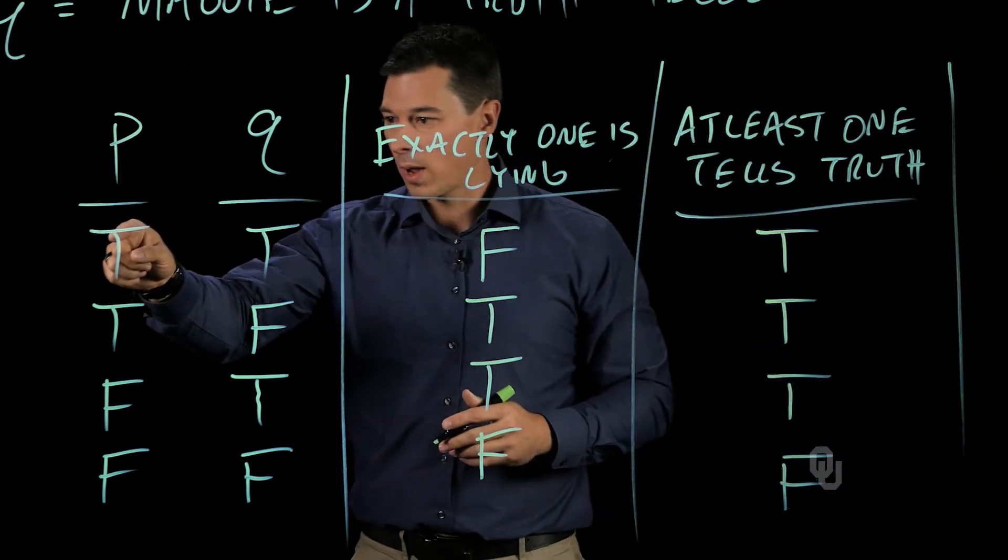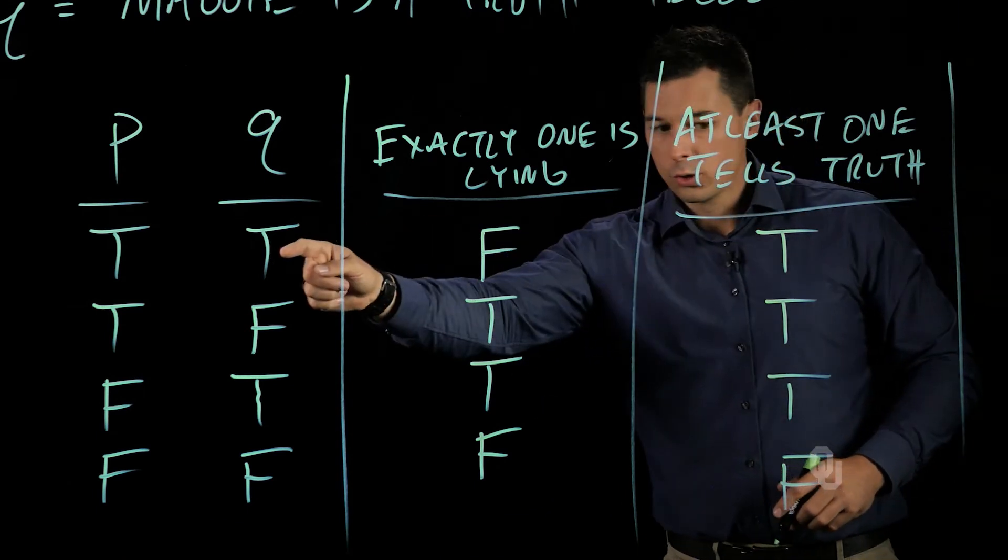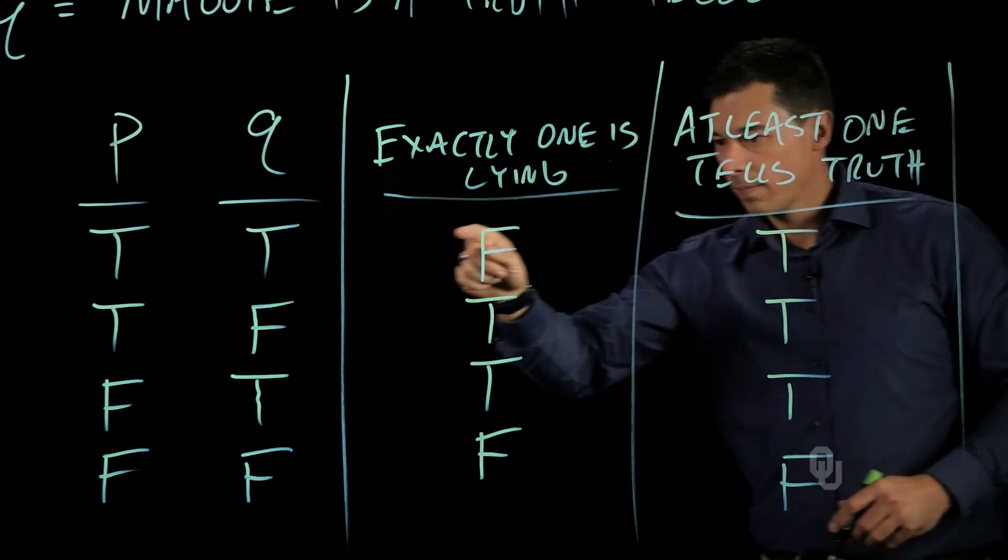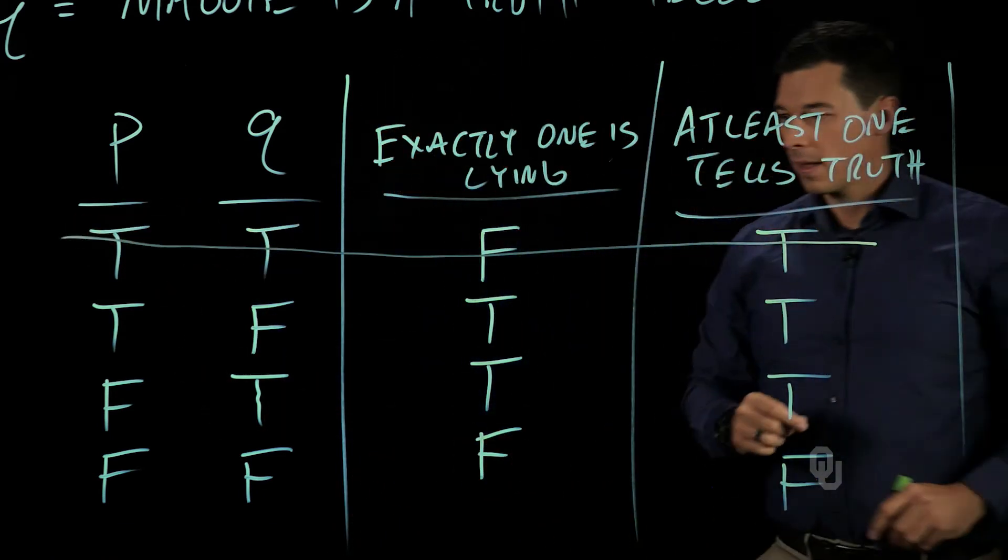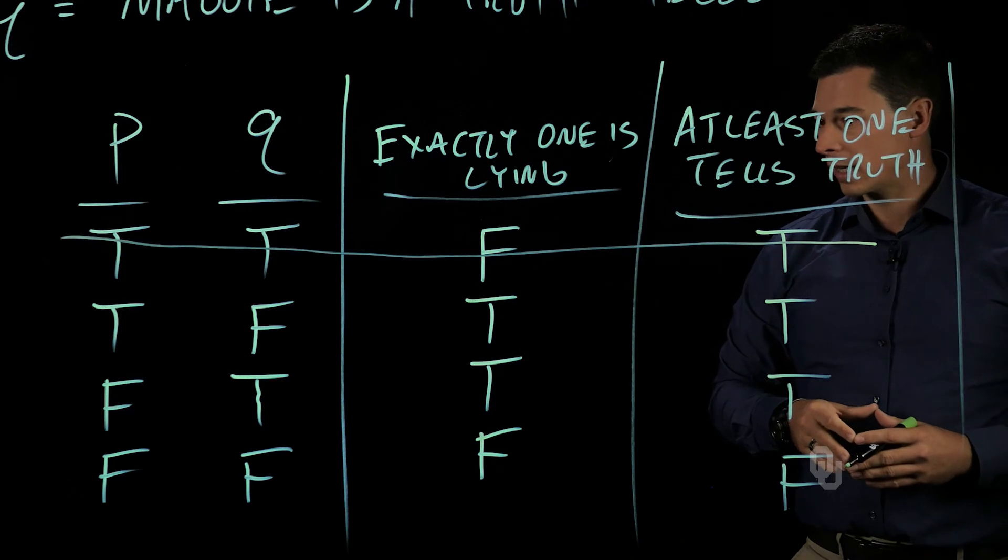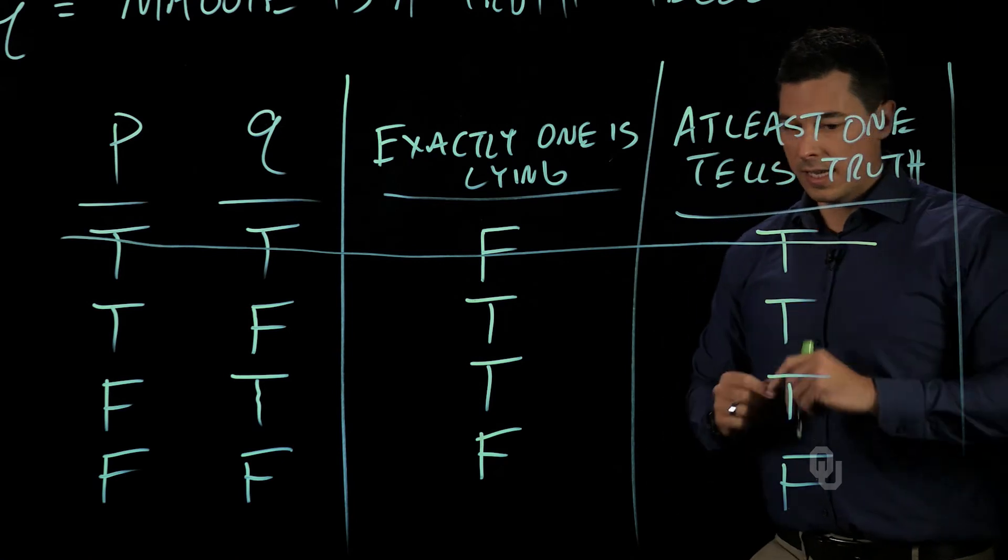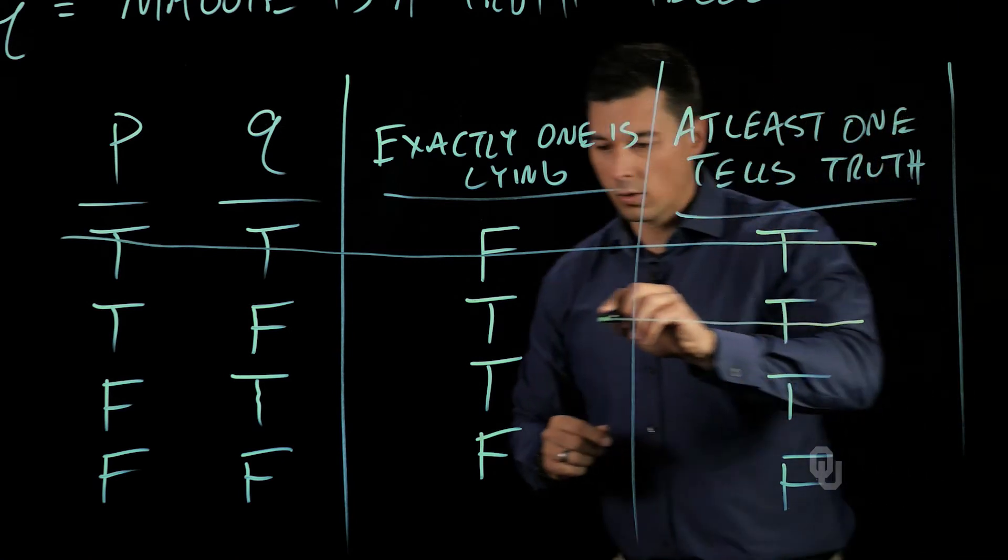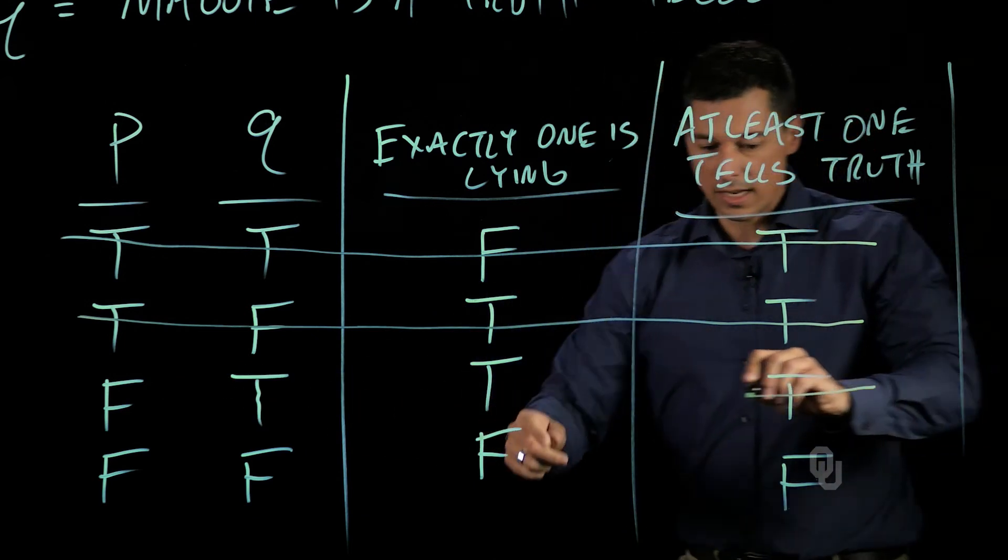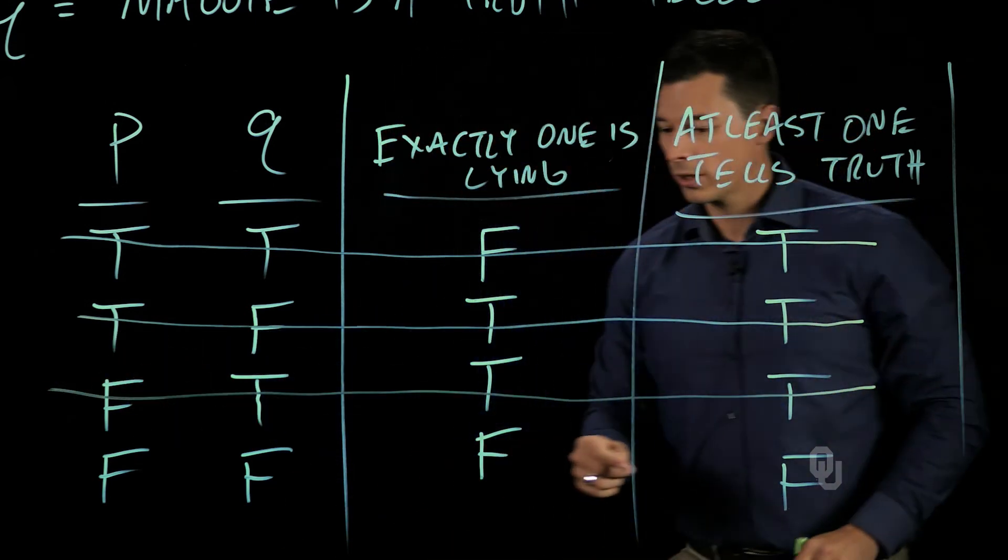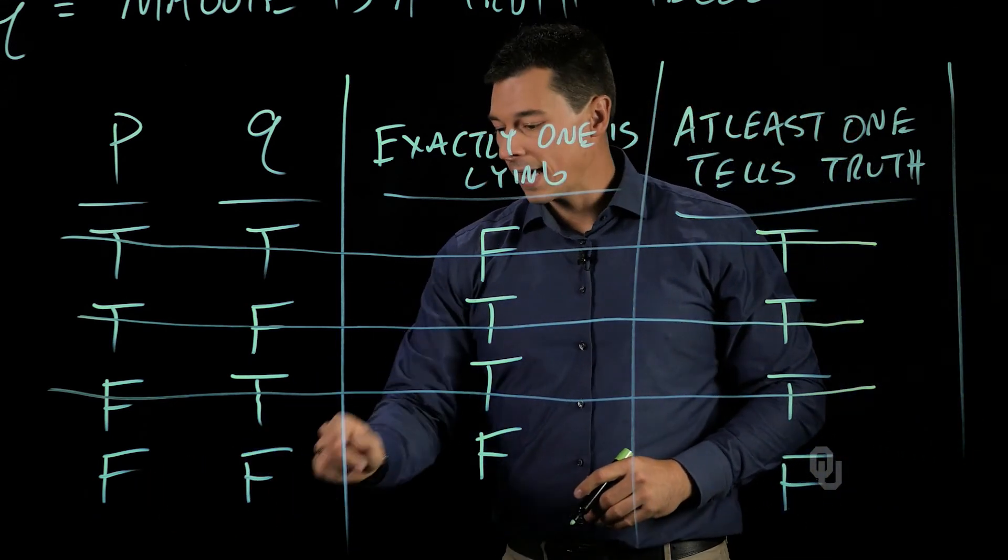So what we have is a truth-teller that is telling the truth. But we know that truth-tellers cannot lie. So it's impossible for this scenario to be consistent with the rules of Smollian's Island. Here we have a truth-teller that's telling the truth, but we have a liar that is telling the truth, and so that is also inconsistent. Again, a liar is telling the truth, so we know that that is an inconsistent possibility in this world. And so the only case that's left is that Glenn is a liar and Maggie is a liar.